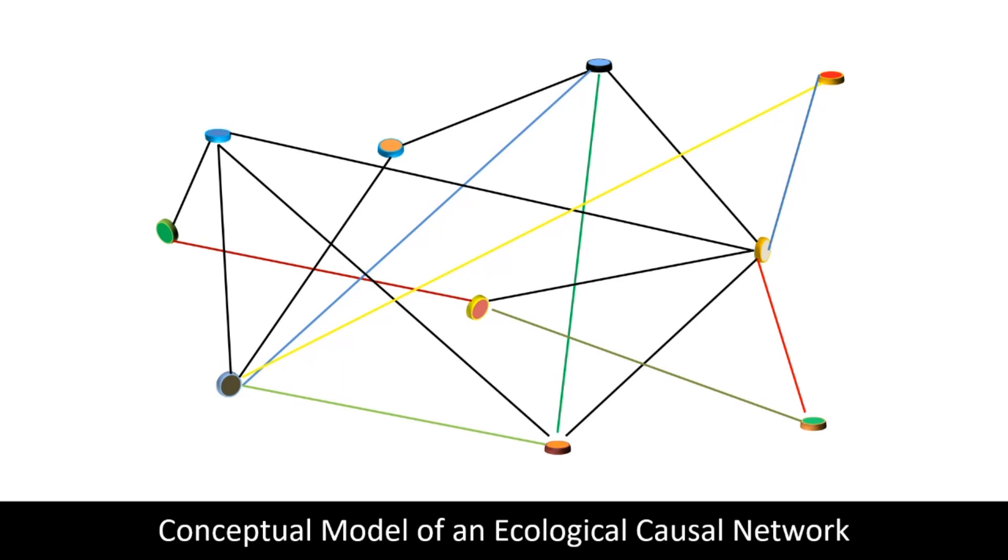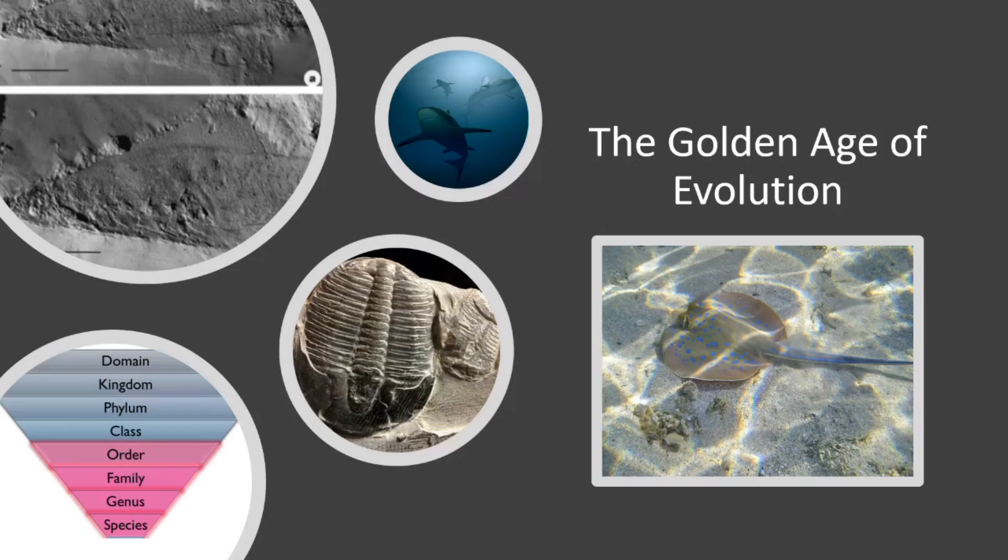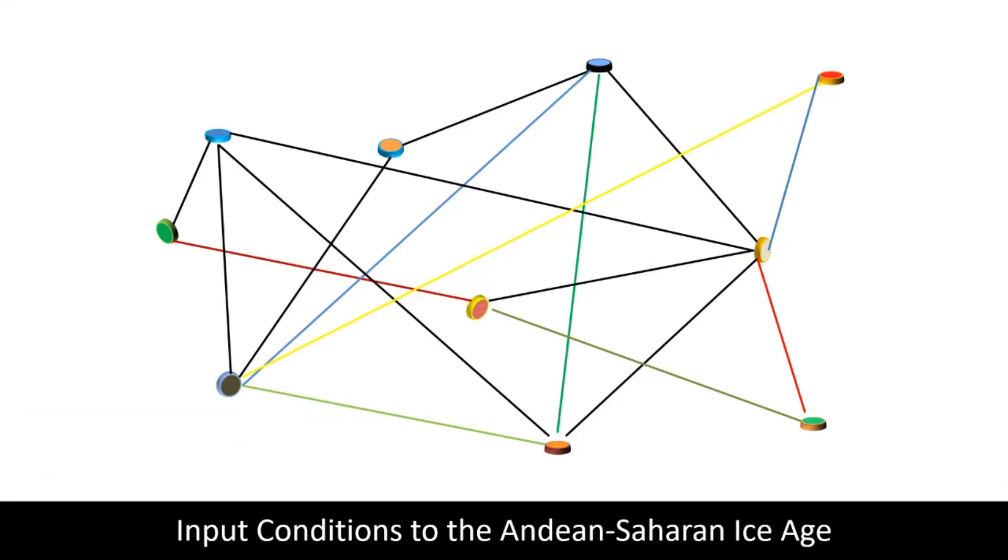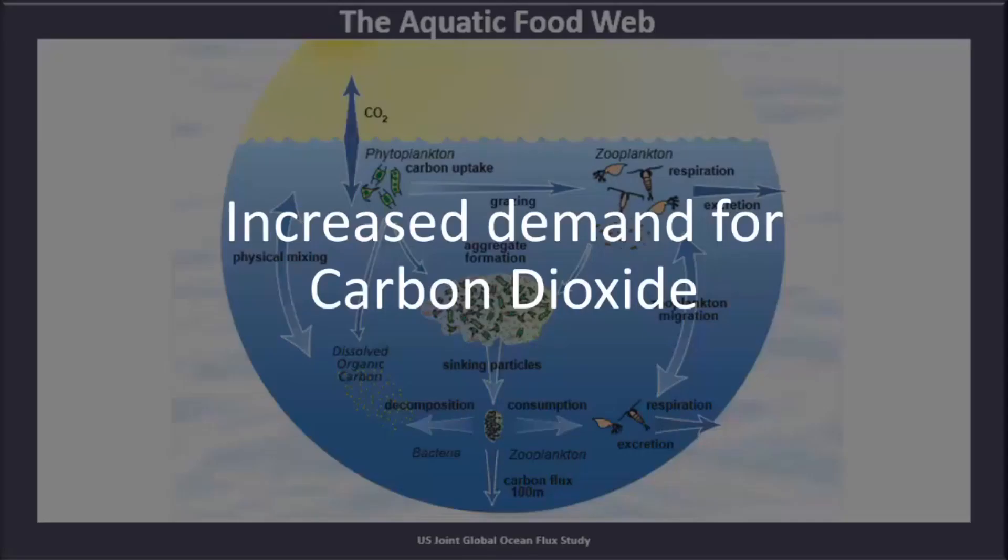To determine the cause of the Andean-Saharan Ice Age, we need to look at those crucial conditions not only prevailing at the time but also historically. As previously described, over the past 80 million years life had experienced a golden age of evolution during which life forms had evolved at a rate and with a diversity not seen before.